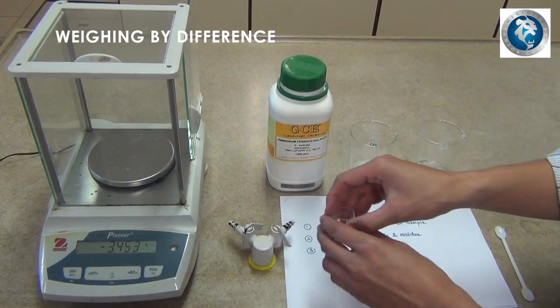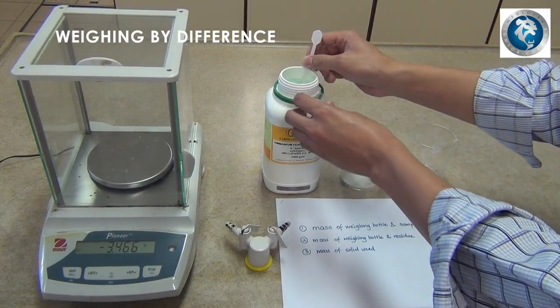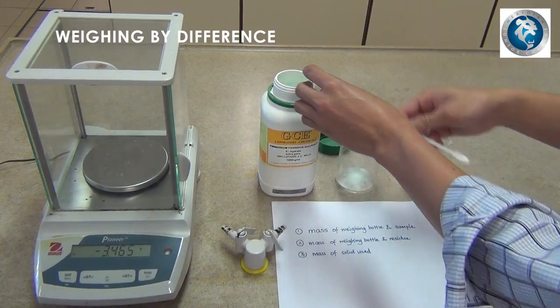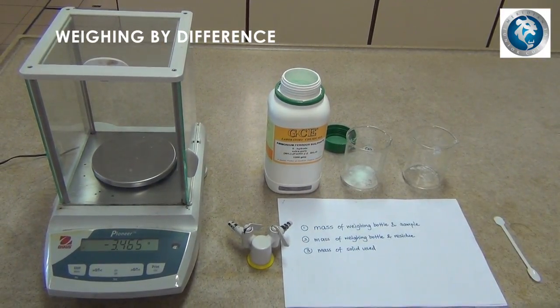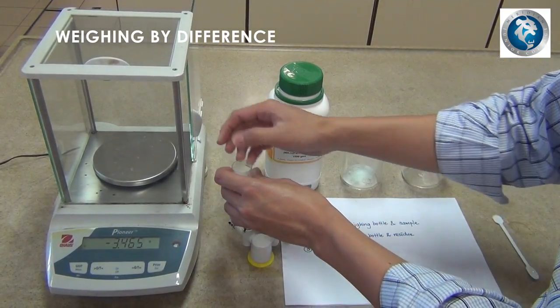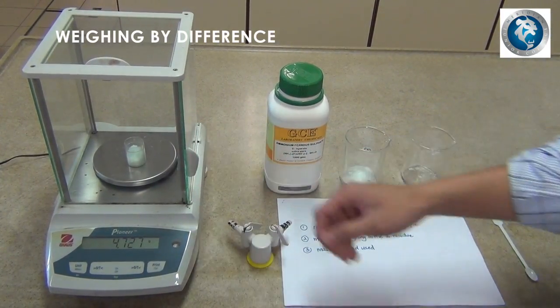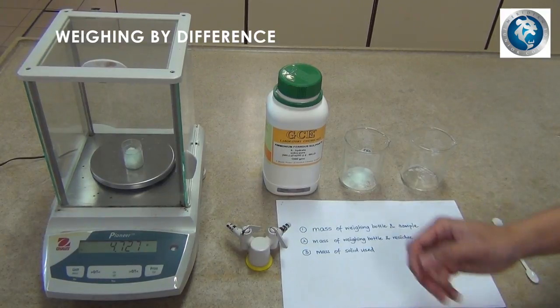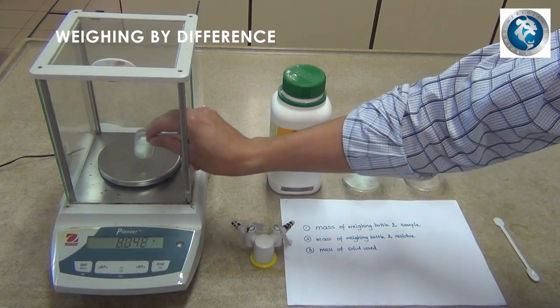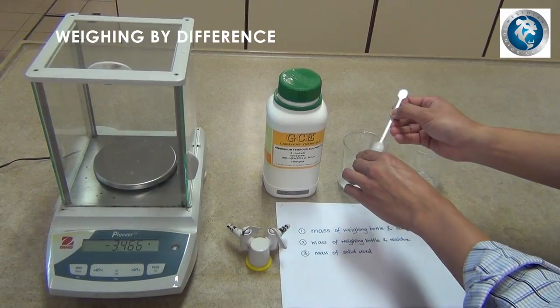Next, we'll fill the weighing bottle with the solid. If you have exceeded the weight that you need, take out the weighing bottle and dispose any unwanted solid into the waste beaker.